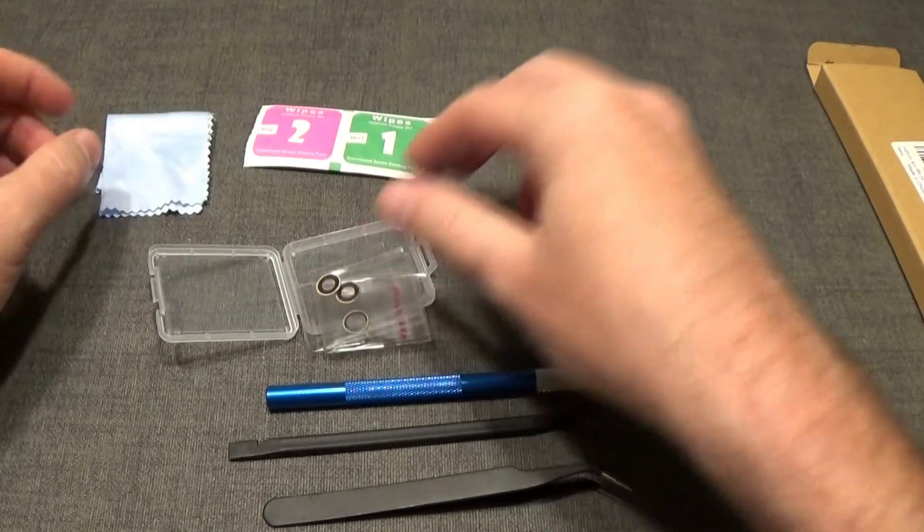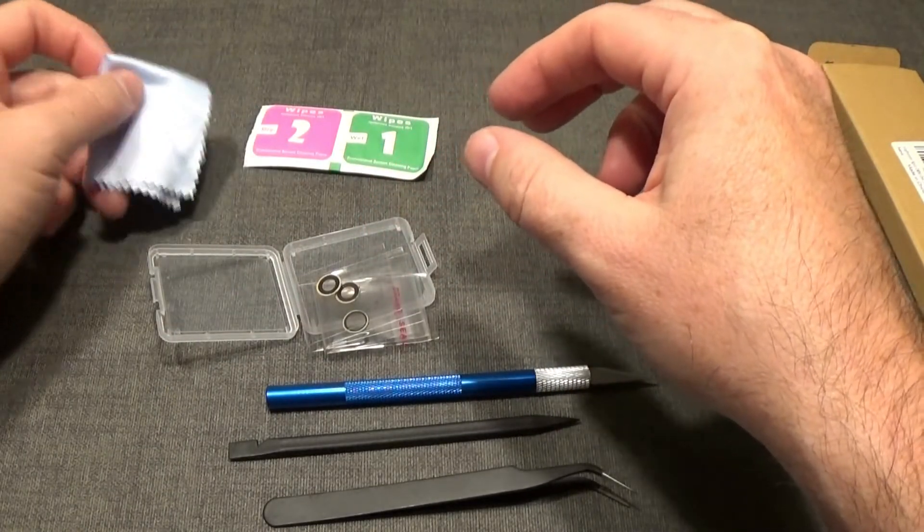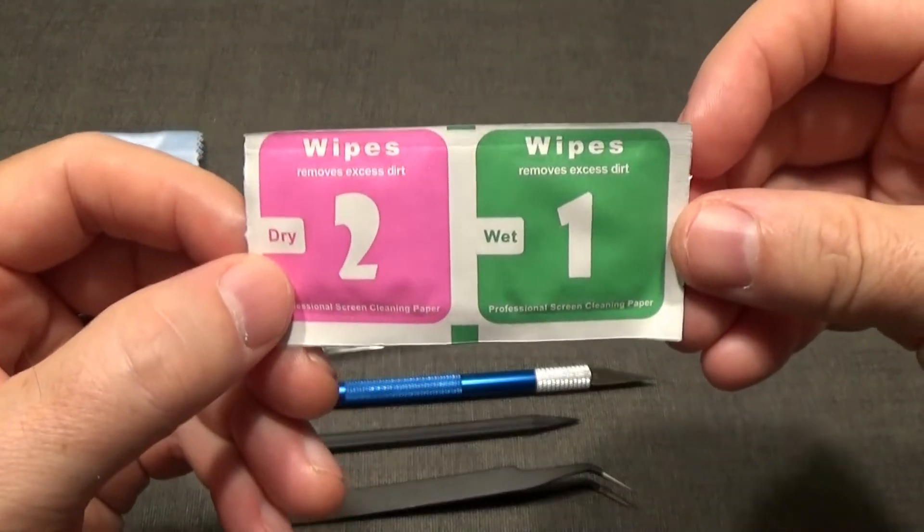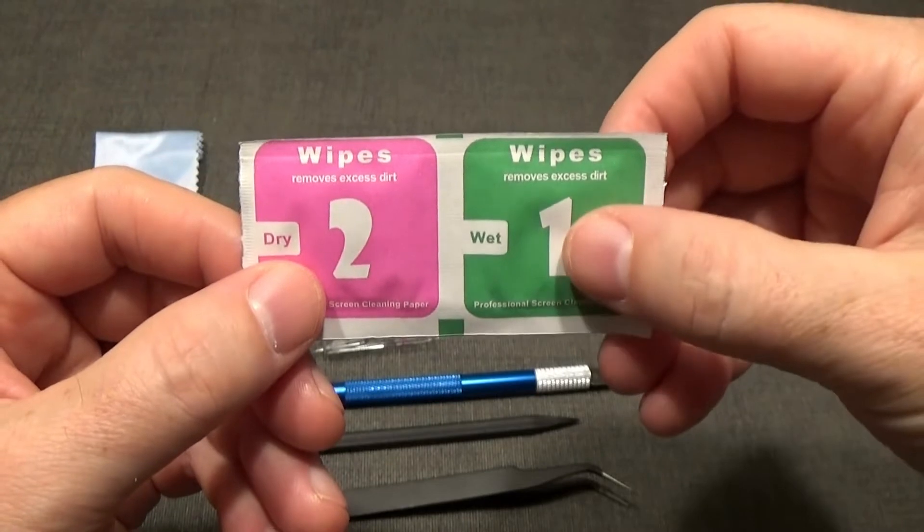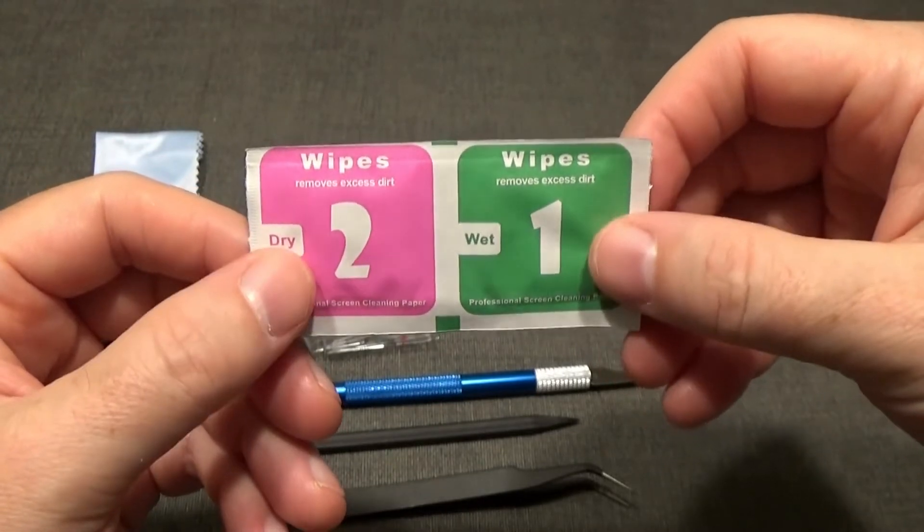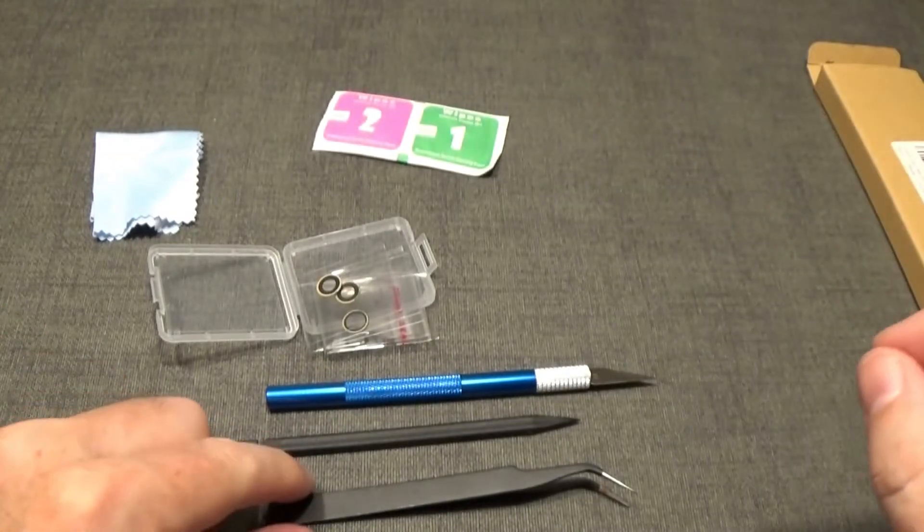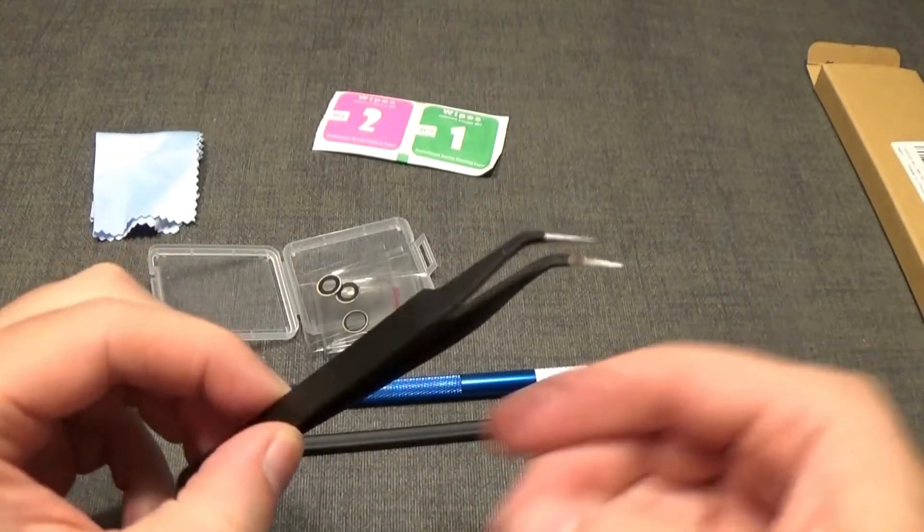The other things that come in this kit: there's a little cleaner cloth which is great, a dry wipe, and then also a wet wipe here to clean off excess dirt and glass shards and stuff like that.